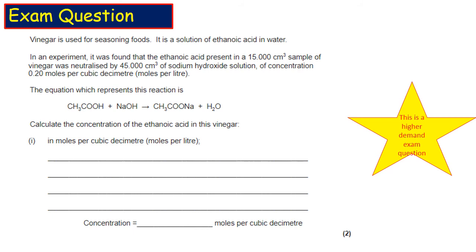Calculate the concentration of the ethanoic acid in this vinegar. And they want it in moles per cubic decimetre or moles per litre because 1 decimetre cubed equals 1 litre.